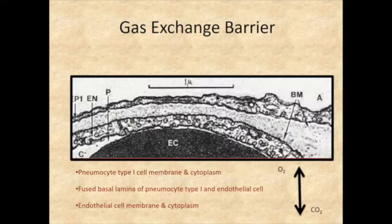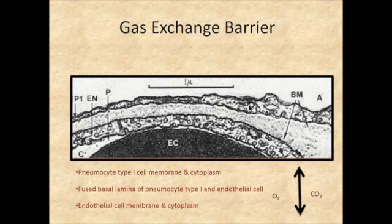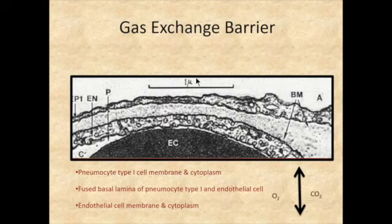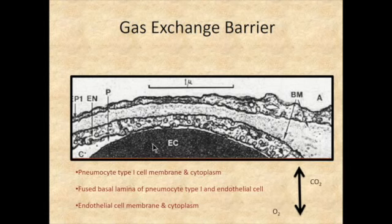Anatomically, you end up with a very specific anatomic gas barrier. Here's the type 1 pneumocyte cell membrane, then the fused basal lamina it shares with the endothelial cell of the capillary. Oxygen comes this way toward the erythrocyte and attaches to the red blood cell, while carbon dioxide goes the opposite way and comes into the alveolar space.